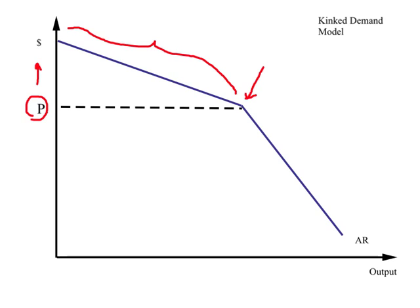If costs fall, the firm may like to lower the price. But when it lowers the price, other firms want to stay competitive and will also cut their prices. So when a price decrease is initiated, the firm may not gain a large amount of market share simply because competitors will follow suit. If the firm increases price, others may not follow; if it decreases price, many will follow. Hence with a price increase the firm loses a large market share, and with a price decrease it gains little.